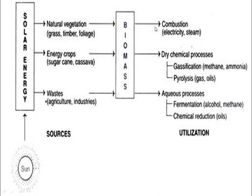All of these are biomass. If biomass is used in combustion, it generates electricity or steam — that is combustion. If we use dry chemical processing, there are two processes: gasification and pyrolysis. In pyrolysis, we use gas and oils to create gas. In gasification, methane and ammonia are produced.